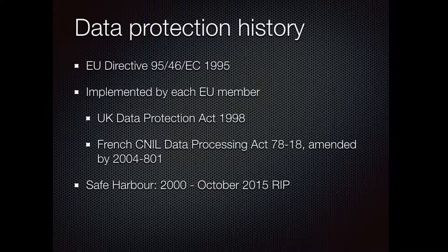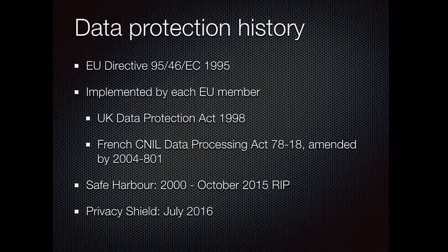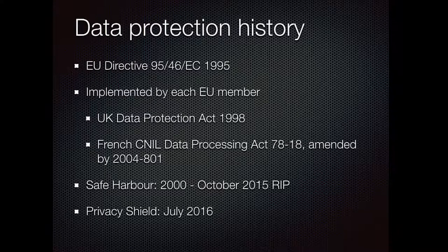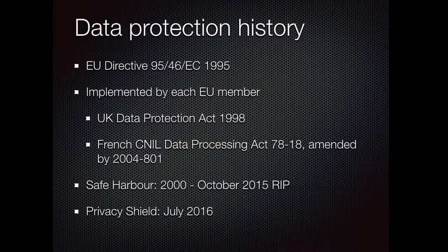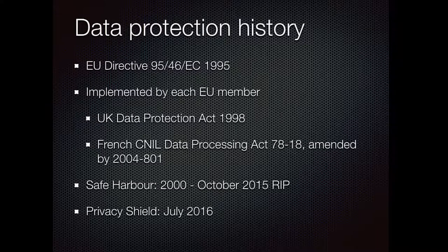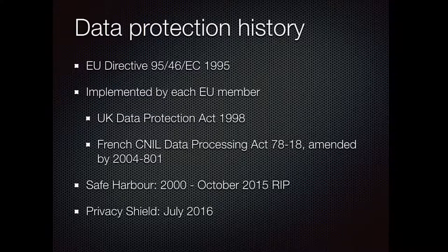The court agreed with him and Safe Harbor died. From that point it was actually illegal to store data on EU citizens in the US — leaving thousands of online services hung out to dry. Nobody was really sued because something had to be done, and not surprisingly it was: Privacy Shield came along in July last year and patched up a lot of the problems with Safe Harbor. Privacy Shield is a voluntary scheme that American companies can register for — you can go to the Privacy Shield website and check whether a company has registered.